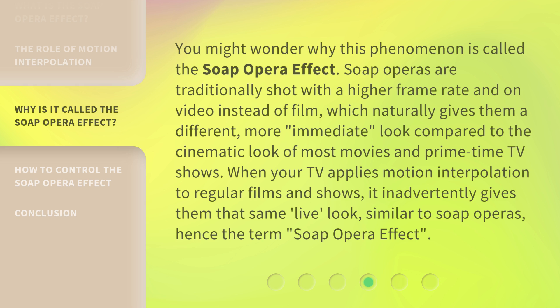You might wonder why this phenomenon is called the soap opera effect. Soap operas are traditionally shot with a higher frame rate and on video instead of film, which naturally gives them a different, more immediate look compared to the cinematic look of most movies and prime-time TV shows. When your TV applies motion interpolation to regular films and shows, it inadvertently gives them that same live look, similar to soap operas — hence the term, soap opera effect.